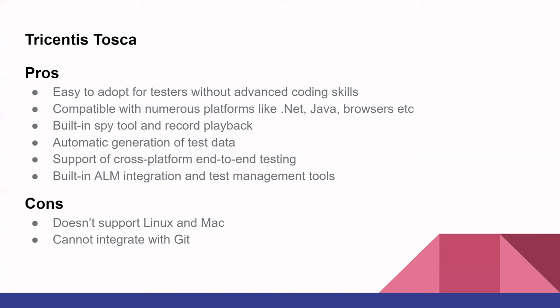The last one in our list is Tricentis Tosca. Tosca offers continuous testing for their customers. It supports all types of test activities: test design, UI testing, API testing, and test data management. Tosca is easy to use for manual testers with little experience in automation. They claim that in 3 weeks they can get 85% of manual testing engineers up to speed with Tosca automation testing. But despite easy adoption, Tosca gradually becomes more complex to use in a long-term perspective.